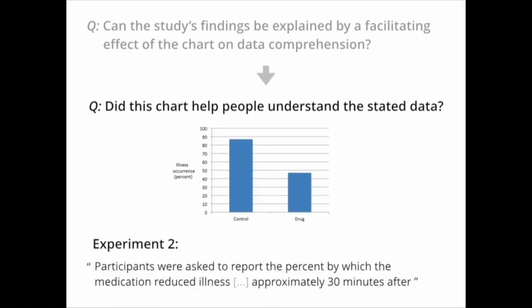To be fair, the original study tried to answer this question. In their second experiment, they asked participants to report the percent by which the medication reduced illness about half an hour after they finished the experiment. And they found that seeing the chart didn't help answer the question, but there are at least five reasons that we list on our paper why we think those results are not very informative, including the fact that this is a recall test, not a comprehension test, and also that a reduction in percentage points is not the most intuitive way of thinking about drug efficacy. So we designed our own comprehension test.